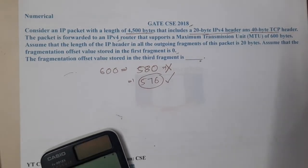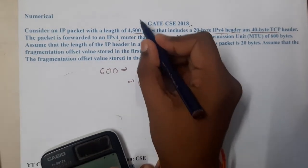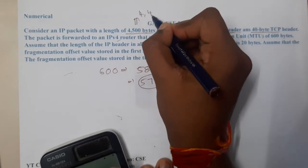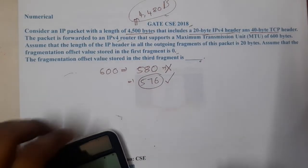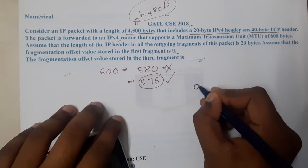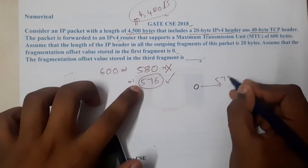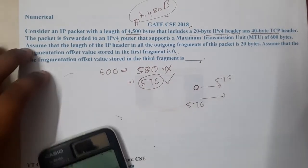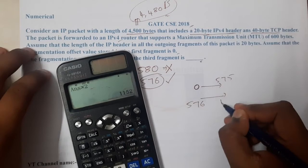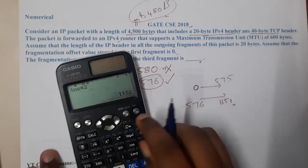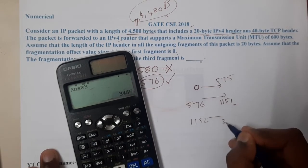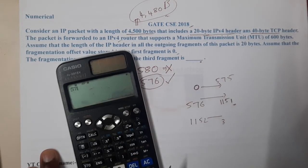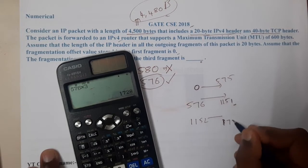Let us start solving. The first packet carries bytes 0 to 575. The second packet starts at 576 and ends at 1151. The third packet starts at 1152 and ends at 1727 (576 × 3 = 1728, so up to byte 1727).